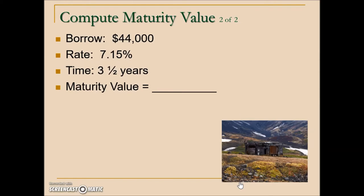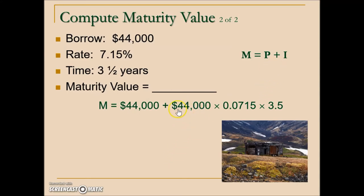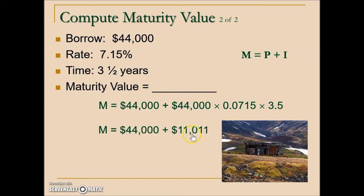In the next maturity value example, the same steps apply. Maturity value equals principal plus interest, where interest equals principal times rate times time. The rate is given as a decimal and time was given in years, using the decimal equivalency instead of a fraction. The interest calculates to $11,011. Adding that to the principal gives the final maturity value — the total amount the borrower must pay to clear the debt.